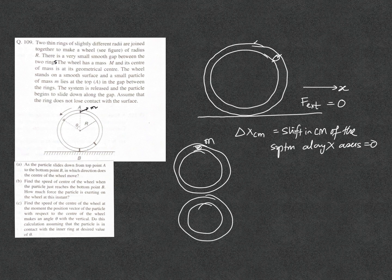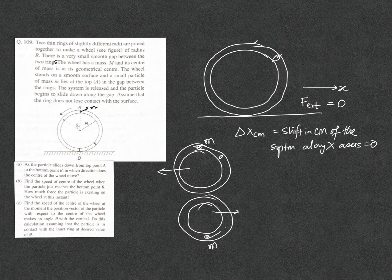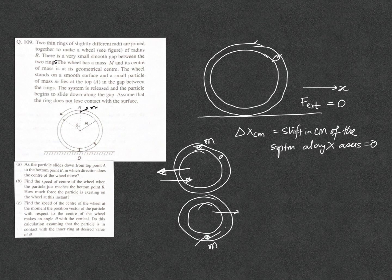Initially the small mass m is at the top and the ring will shift to keep the center of mass in the same place. As the mass slides down, the ring shifts accordingly. Ultimately, when the small mass reaches the bottommost point B, the center of the wheel returns to the same place. So the center of the wheel first moves to the left and then moves back to the right, ending up at the same position.